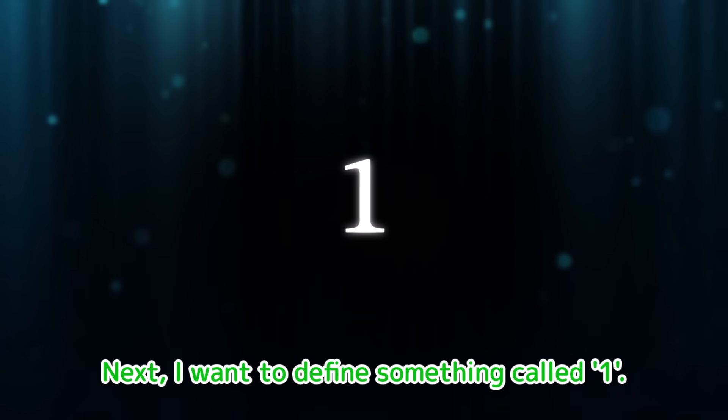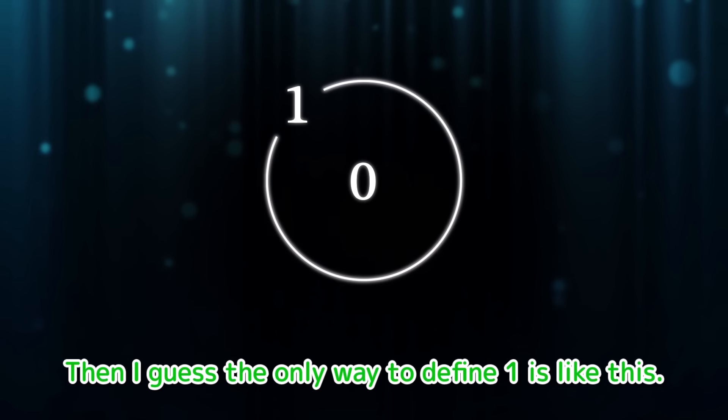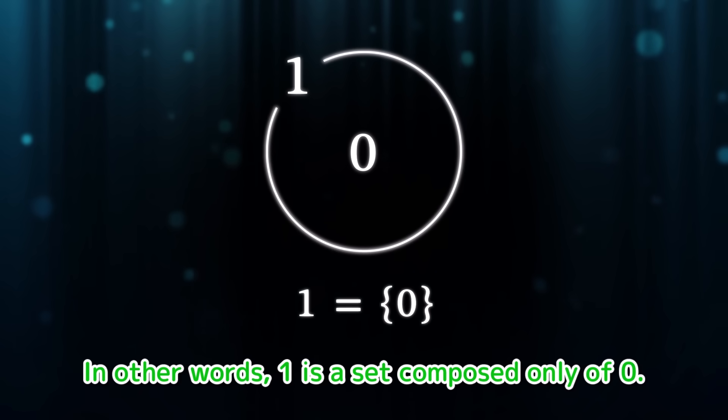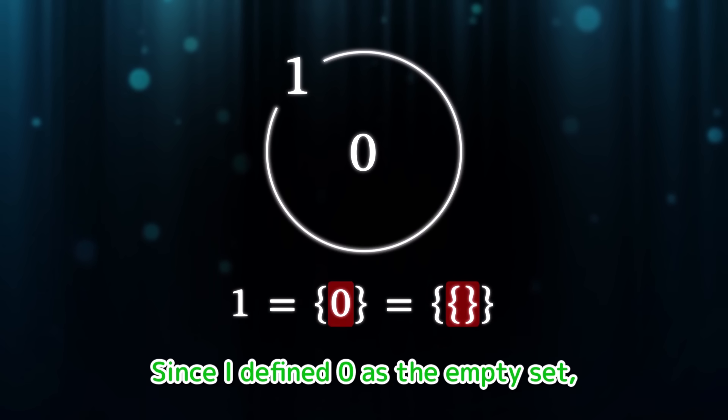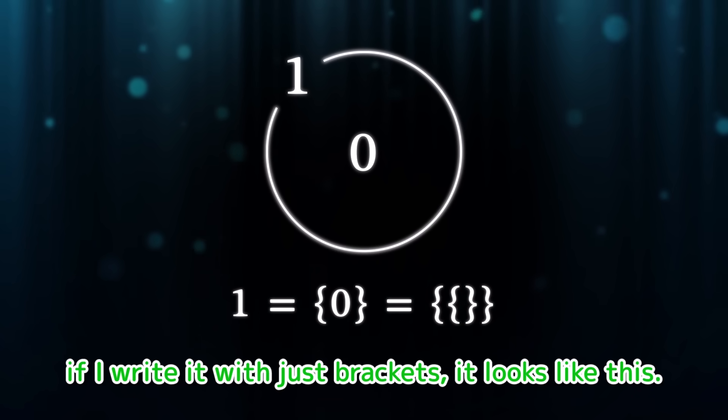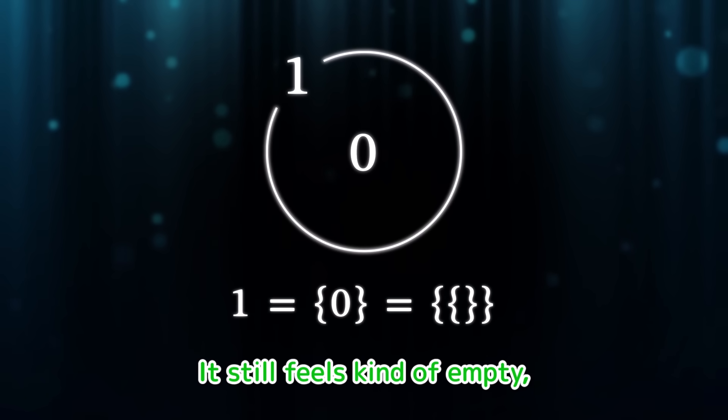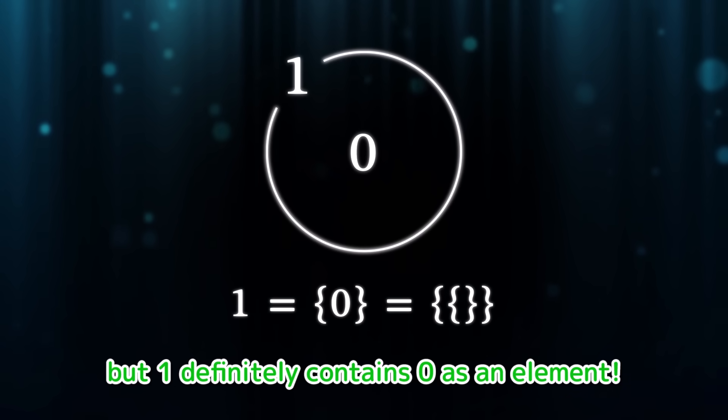Next, I want to define something called one. I don't know why, but I just felt like defining one after zero. Right now, all I have is the zero I just defined. Then I guess the only way to define one is like this. In other words, one is a set composed only of zero. If I remember right, since I defined zero as the empty set, if I write it with just brackets, it looks like this. It still feels kind of empty, but one definitely contains zero as an element.